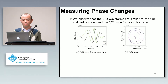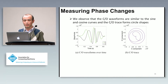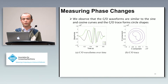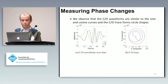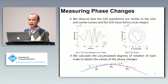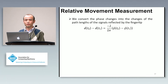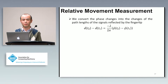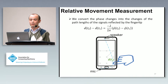After that, we compute the phase change of the signal to recover the finger's movement. We learn that the finger movements are similar to sine and cosine curves, and if we map the finger trace in two-dimensional space, the trace forms a circle shape. We then calculate the accumulated degree of rotation of each node in the curve — where a node is the starting or ending point of each line — to obtain the phase change values. We then convert the phase change into a change of the path length of signals reflected by the fingertips, where the path means the distance between the fingertips and the speaker plus the distance between the fingertips and the microphone.